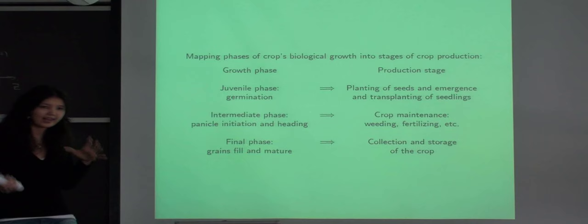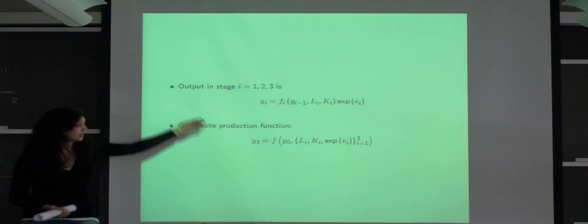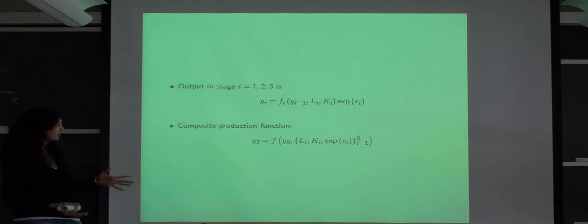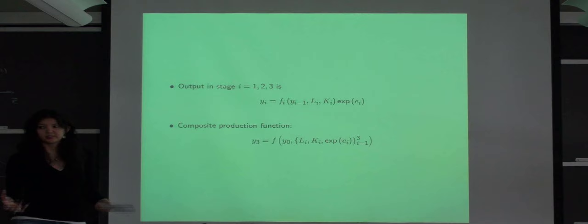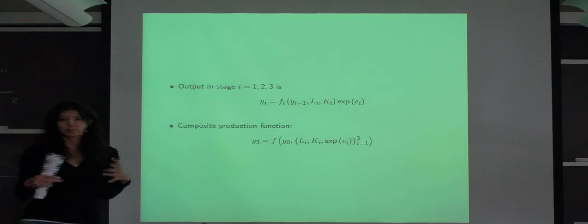So we identify three stages, three growth phases which are roughly planting, plant growth, and harvesting. For each of these three production stages we can think of them as a separate production sub-process with its own production function. The inputs into that stage-specific production function are labor and non-labor inputs used in that stage, production shocks that will be realized during that stage, and also intermediate output from the previous stage which measures the progress of rice growth.